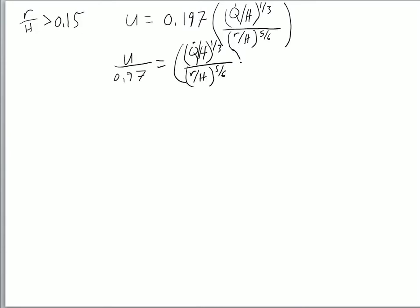Then we'll multiply across by the denominator. So we'll have u over 0.197 multiplied by r over h to the five-sixths power, equals q dot over h to the one-third power.